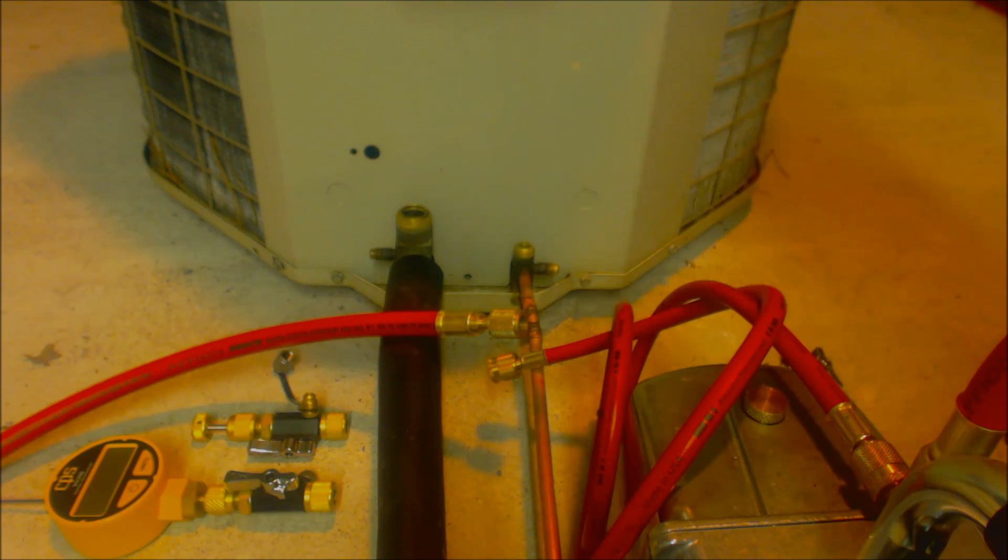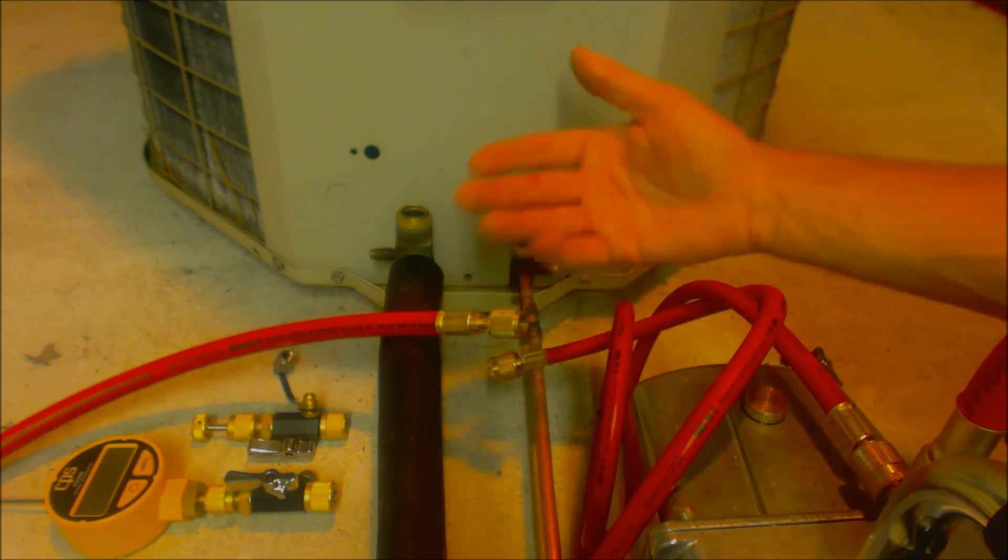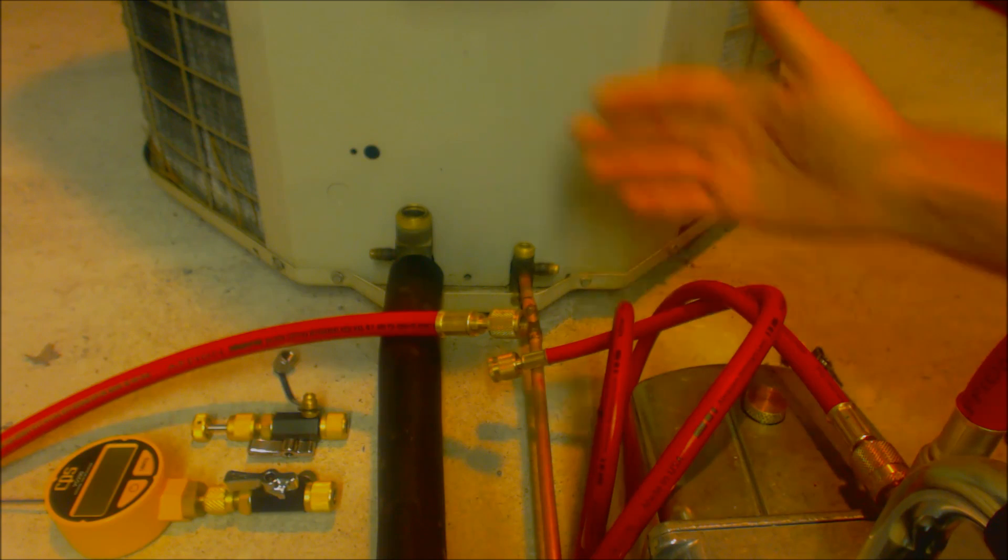This vacuum will be done after the brazing and after the pressure test. Part of the line set or the evaporator coil may be existing, so it may have oil in it. In that case you want to do an oil blowout after the pressure test. If it's a whole new system you do not need to do an oil blowout. You can check some of the other videos I have in the playlist for nitrogen pressure testing and oil blowouts.